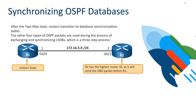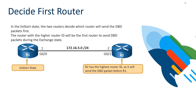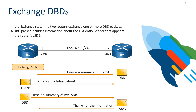Our routers then move on from the two-way state and election to the synchronization process for their OSPF database — specifically, synchronizing their link state databases, which is their topology table. To start this, we use the Xstart state, also known as the Exchange Start state, where routers choose who shares their link state database first. That database is shared as a DBD packet — a summarized form of the link state database. The router with the highest value sends its database description packet to R1, and R1 acknowledges receipt.